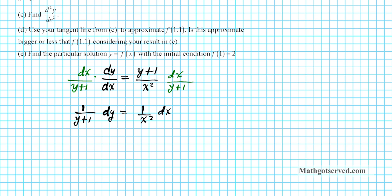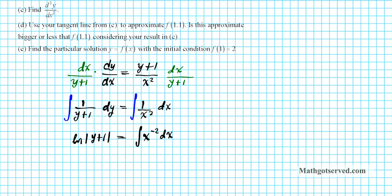Now let's go ahead and solve this differential equation. To solve it, we have to do the opposite of differentiating, which is integrate — we're going to integrate both sides. We have two expressions to integrate. For the left side antiderivative, you can use a u substitution. If you call y + 1 as u, then du is simply dy. Integrating gives the natural logarithm of u, and plugging back in gives the natural logarithm of the denominator. So the antiderivative of 1/(y + 1) is the natural logarithm of the absolute value of y + 1. On the right side, I can write 1/x² as x to the negative 2, which makes it easy to use the power rule for integrals.